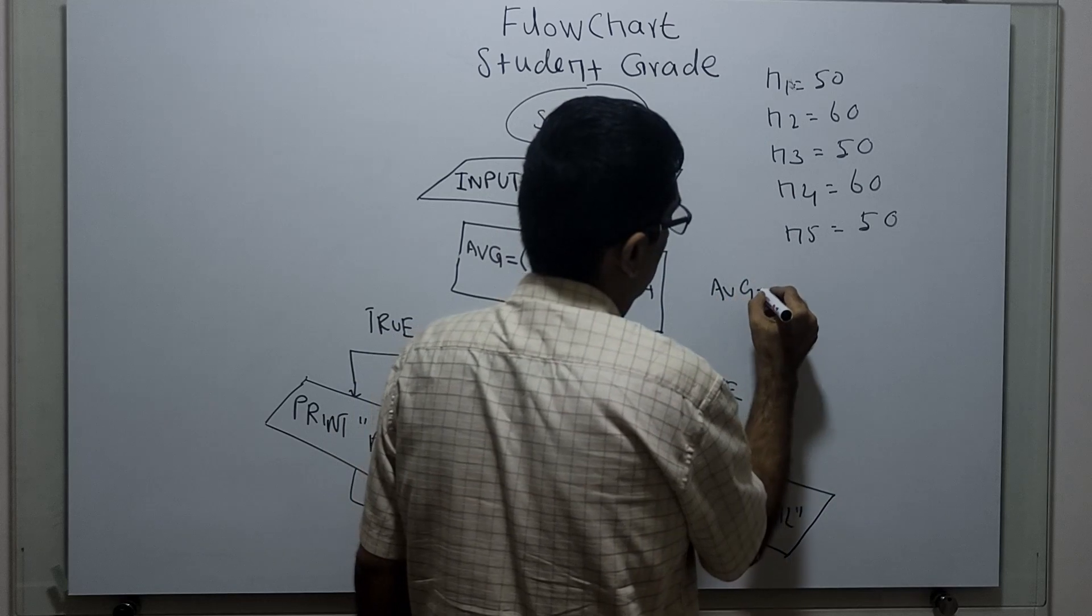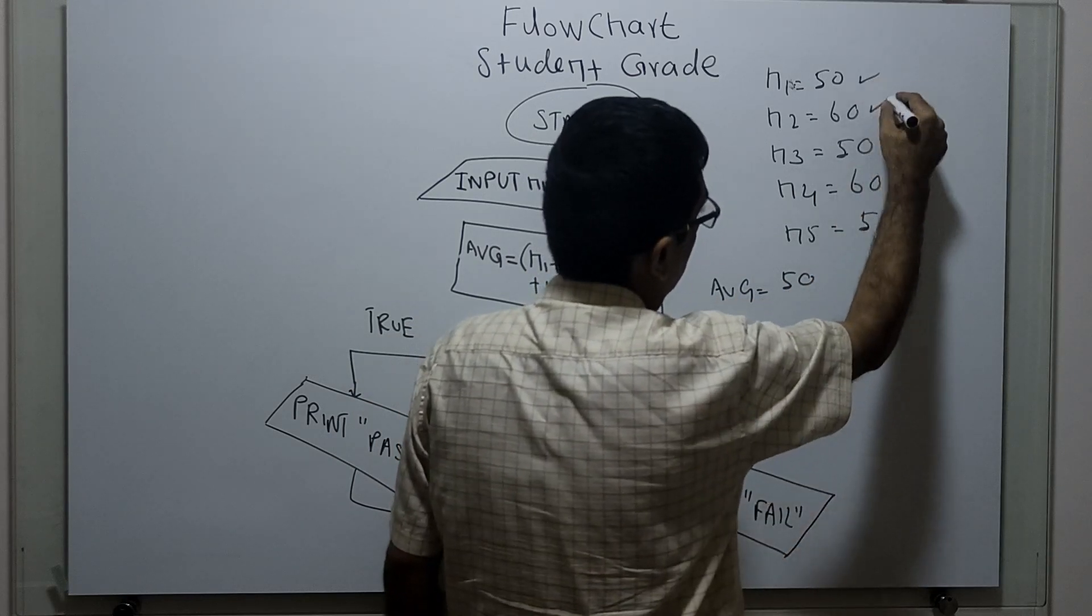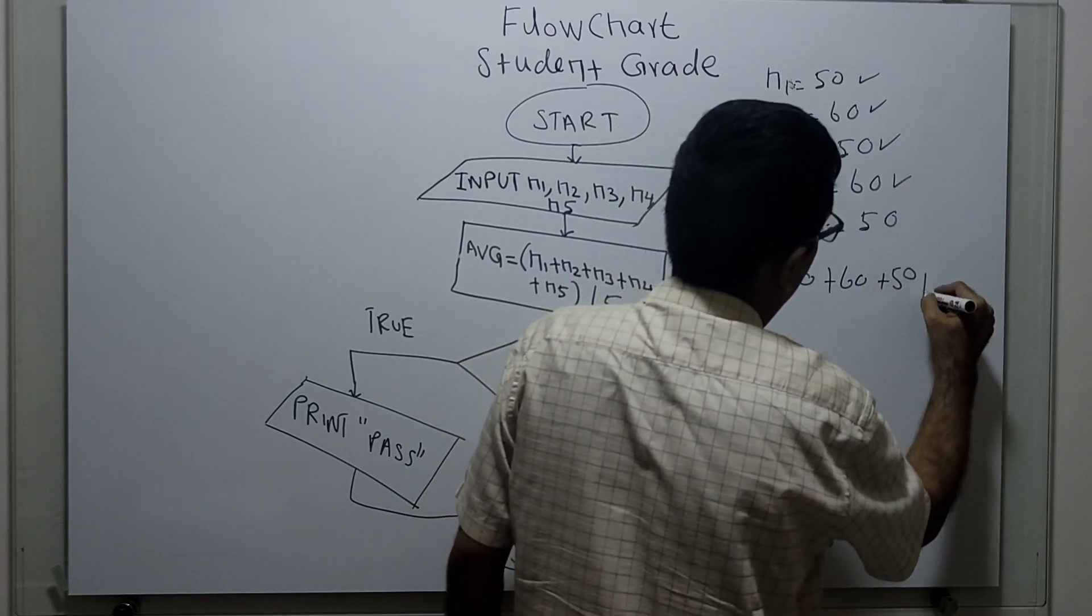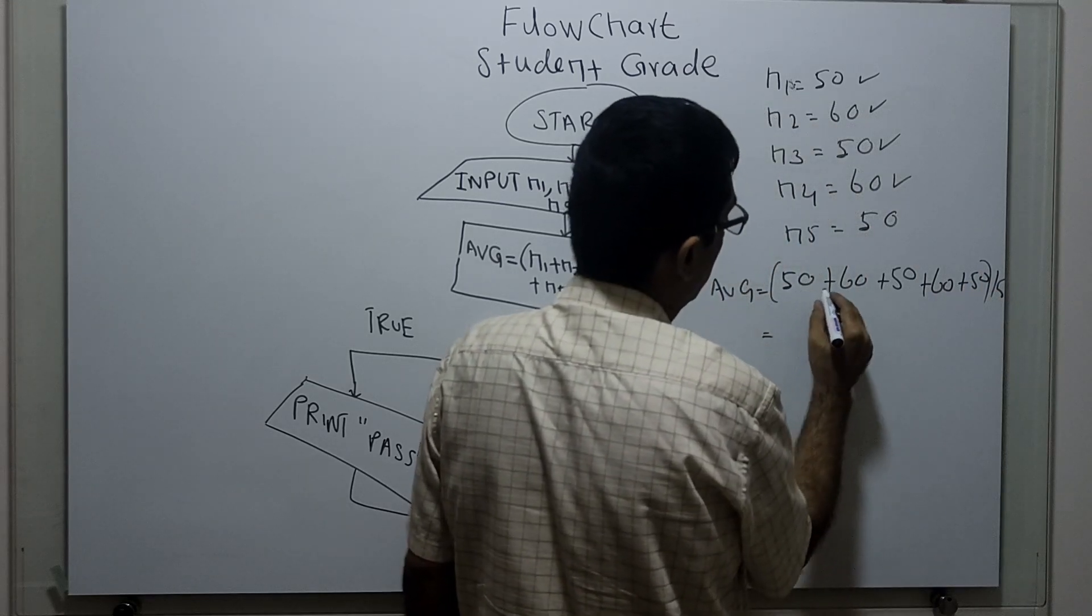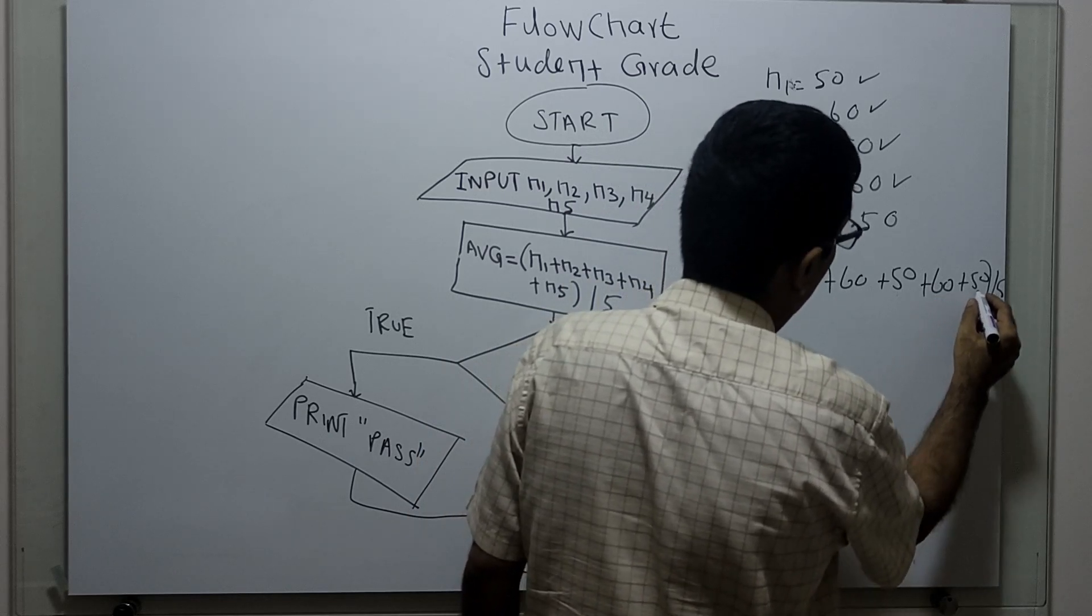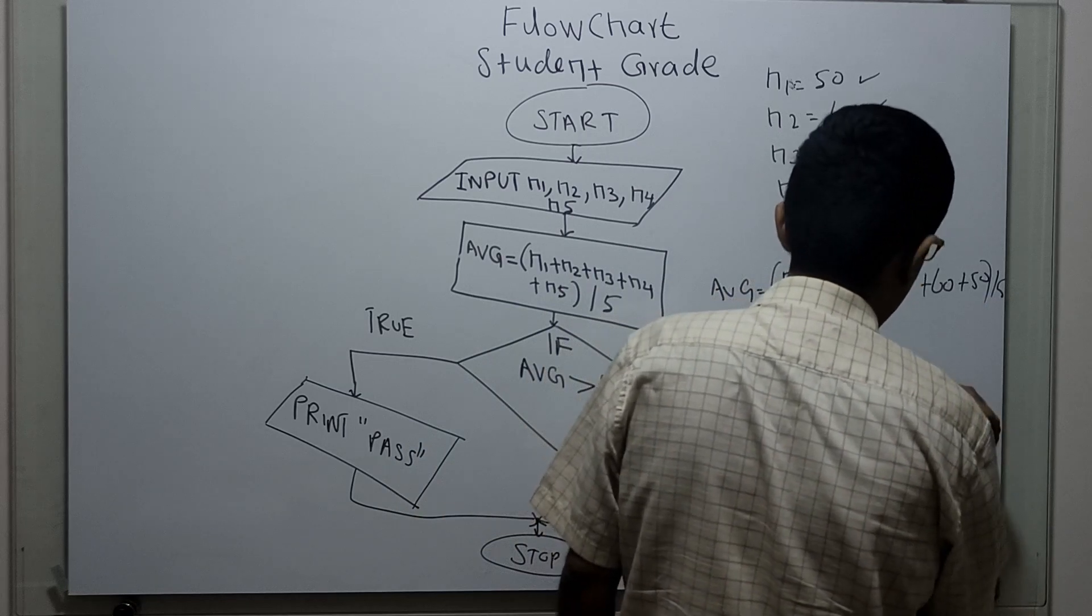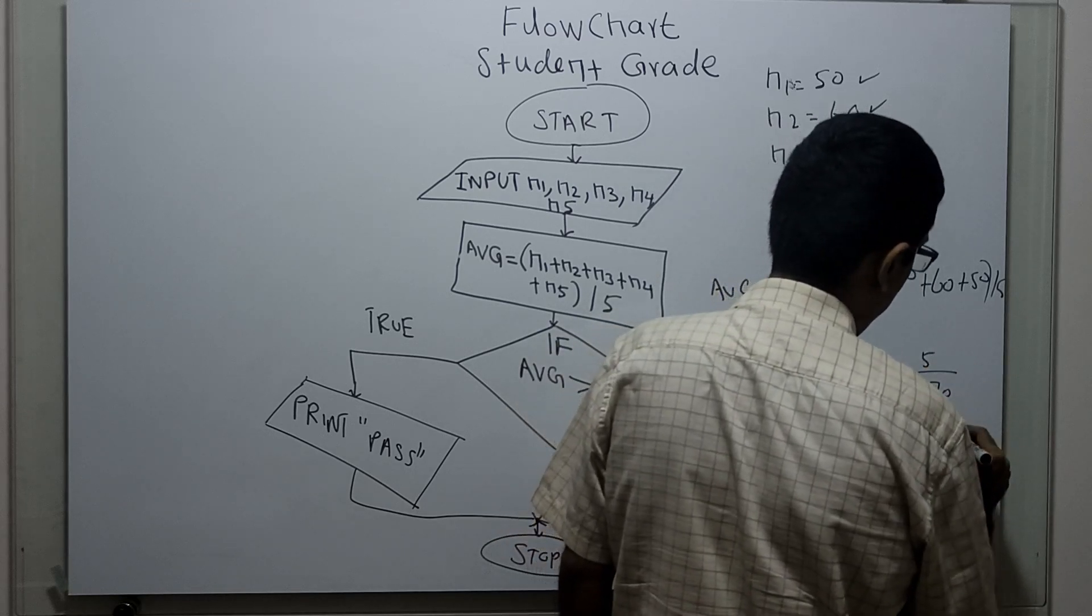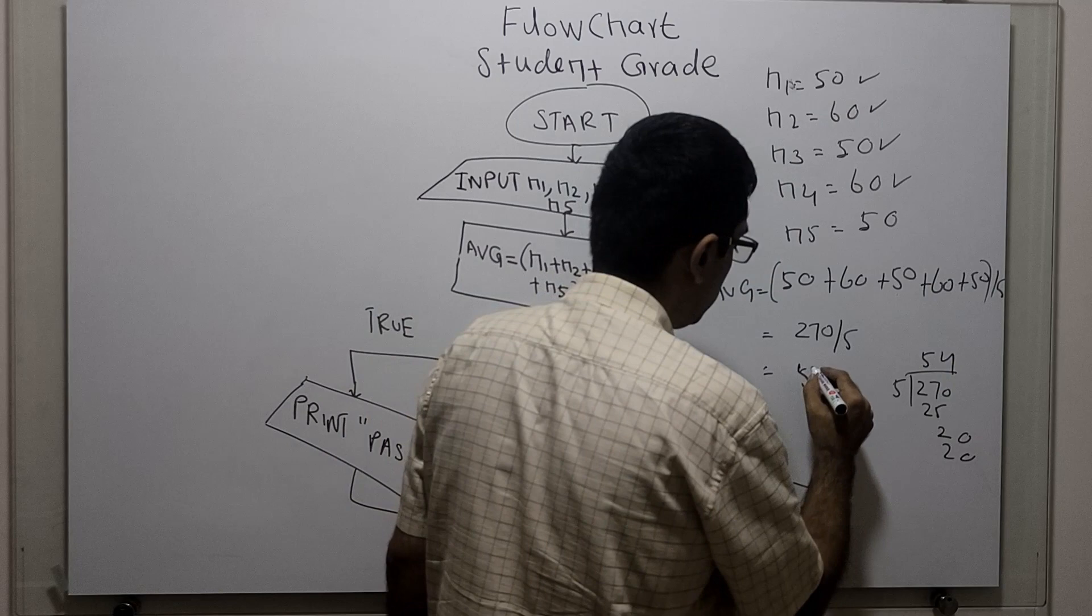So average: 50 plus 60 plus 50 plus 60 plus 50 divided by 5. So value is 50 plus 60 equals 110, plus 50 equals 160, 160 plus 60 is 220, 220 plus 50 is 270. 270 divided by 5 - so this will go 5 times, 25 minus 2, and 0, this will go 4 times. So the average is 54.